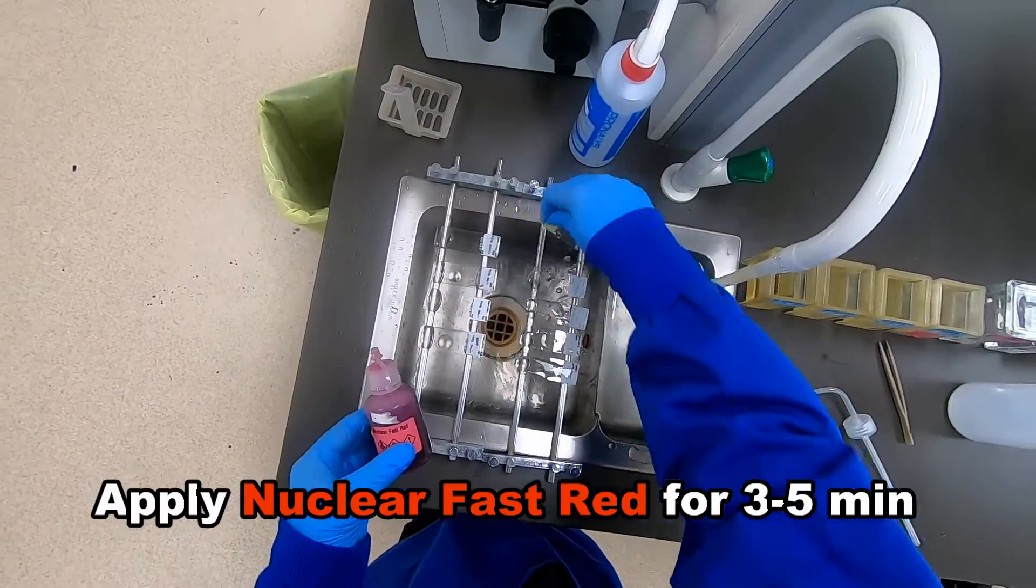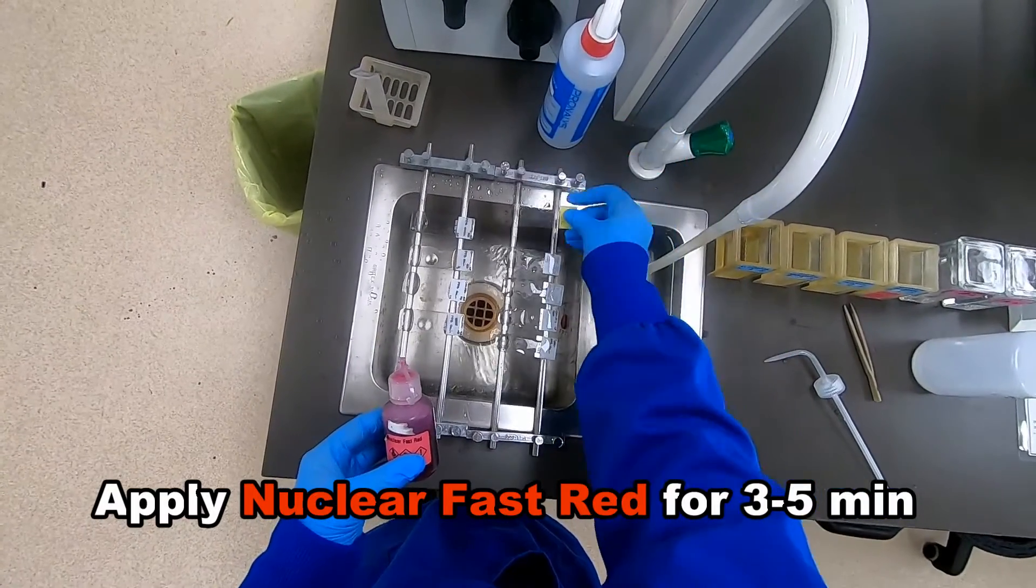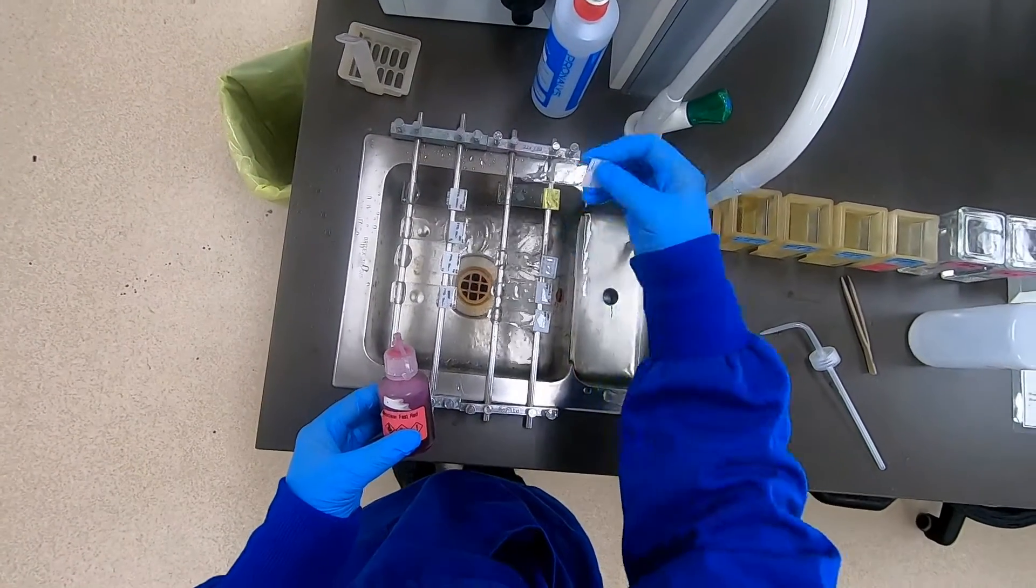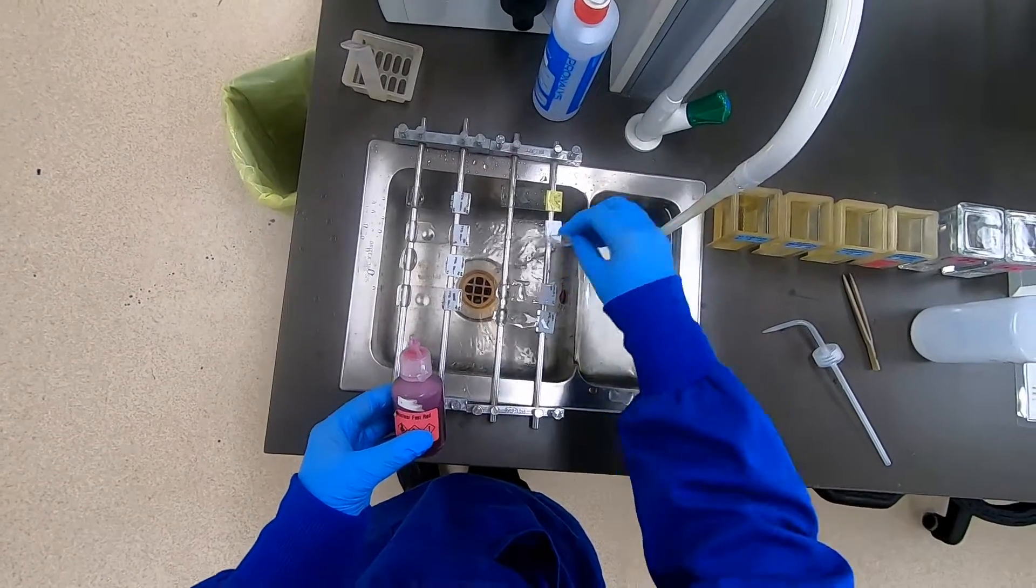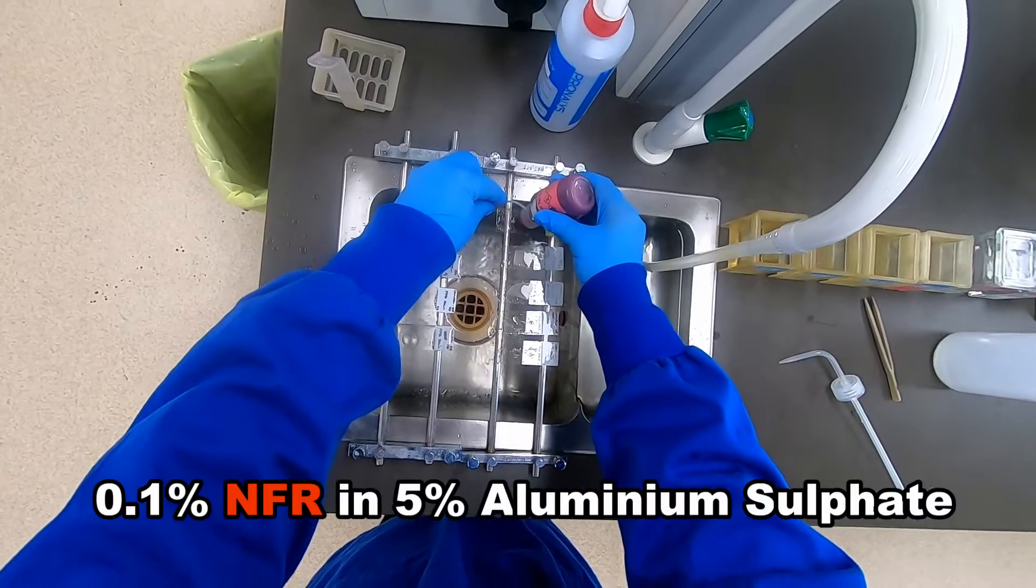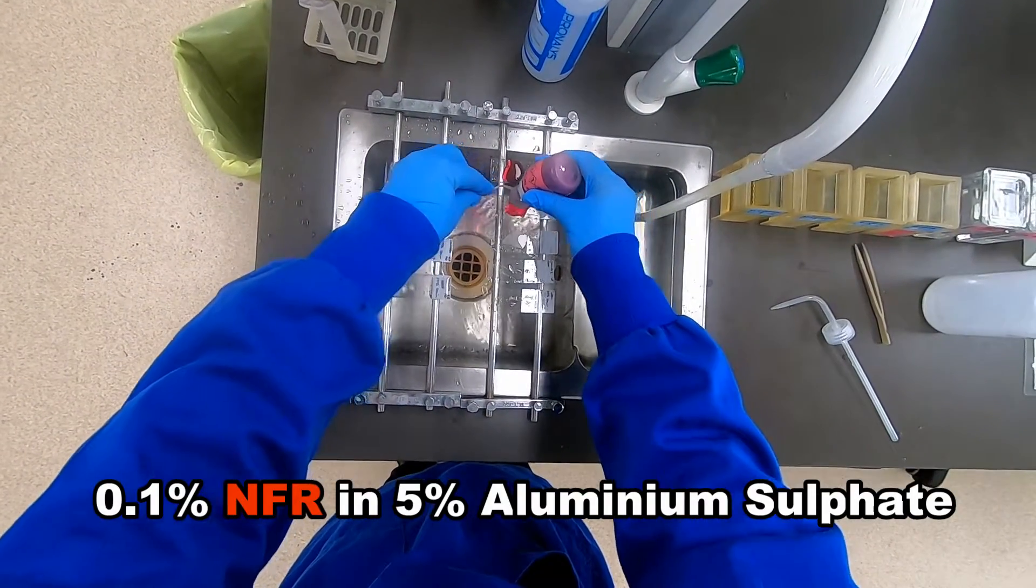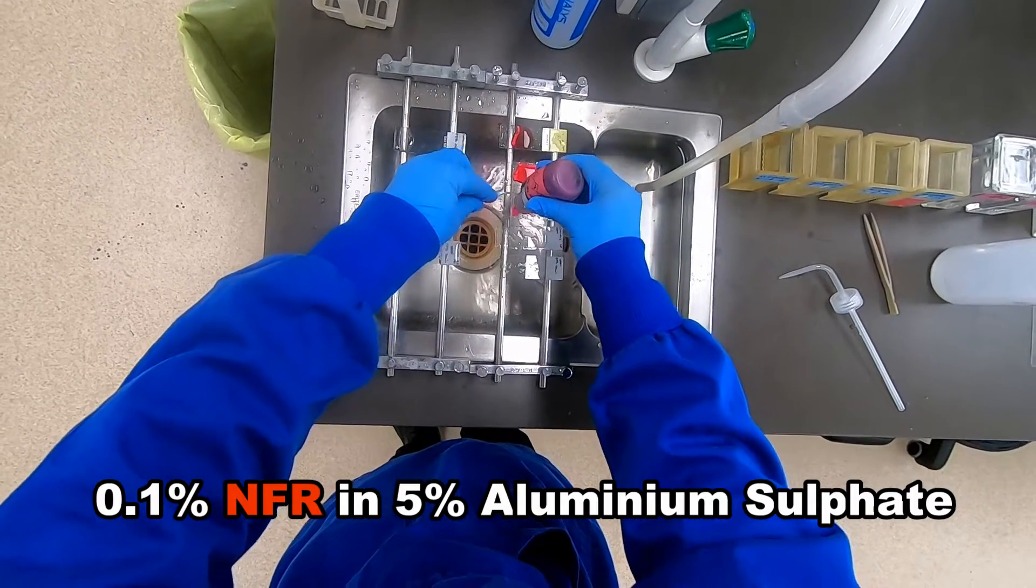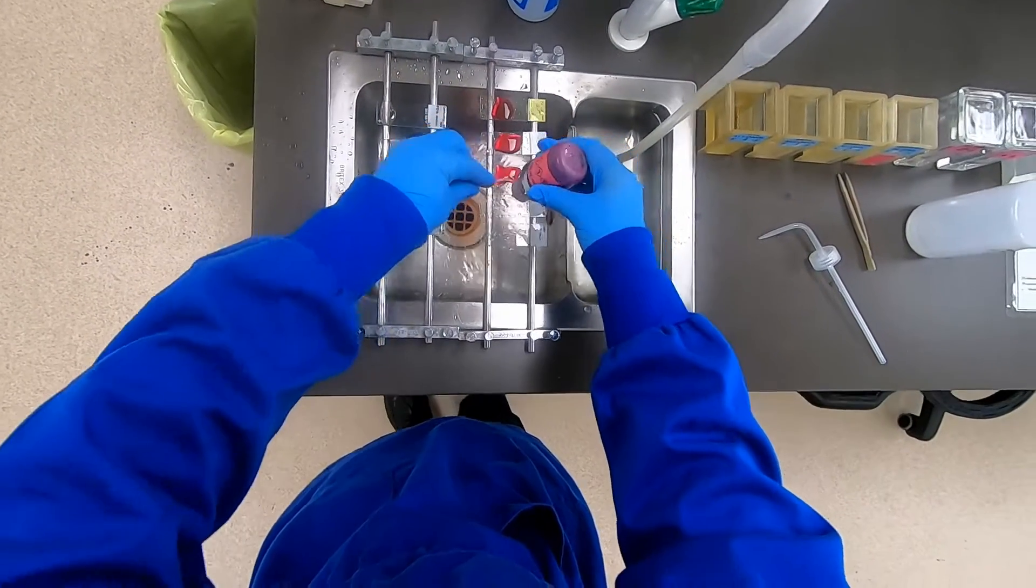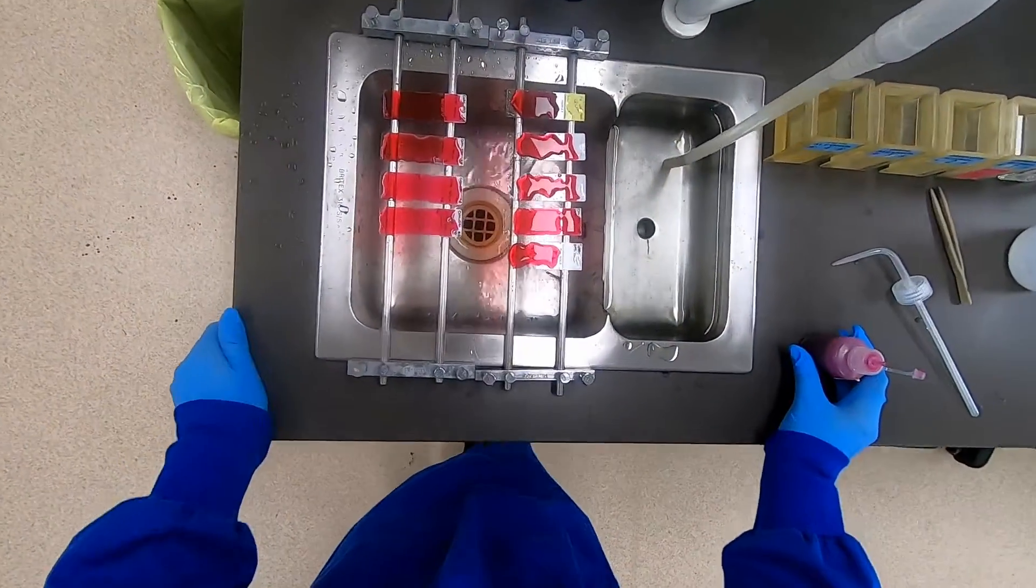Finally, you've got a choice with the counter stain that you use. You may recall some of the colorful alternatives that Chris Casier has been experimenting with here in the lab, but on this occasion we're going with the standard nuclear fast red and we apply that for approximately three to five minutes.